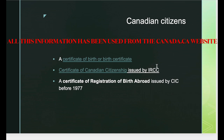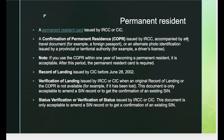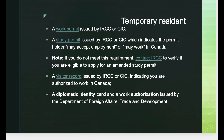The primary document can be different for Canadian citizens, permanent residents, and temporary residents. For Canadian citizens it can be a birth certificate or certificate of Canadian citizenship. For permanent residents it can be a PR card, COPR (Confirmation of Permanent Residence) issued by IRCC, Record of Landing issued by CIC before June 28 2002, Verification of Landing issued by IRCC or CIC, or Verification of Status issued by IRCC or CIC.